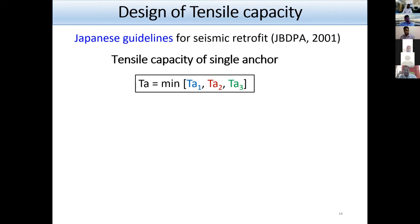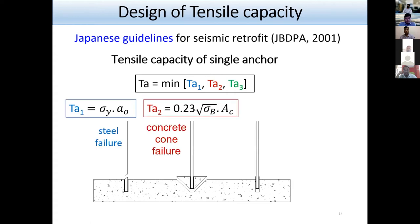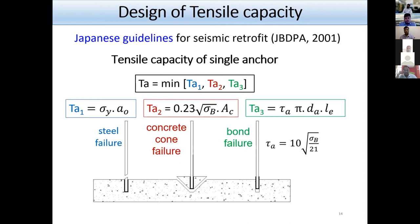According to this guideline, the tensile capacity of a single anchor, TA, should be the minimum of: TA1, determined by steel strength; TA2, determined by concrete cone strength; and TA3, determined by bond failure strength.